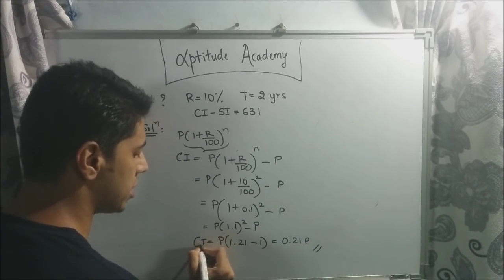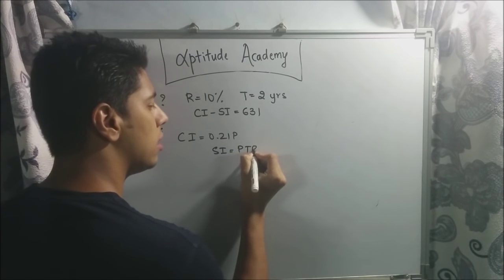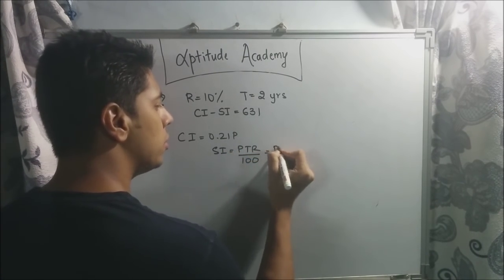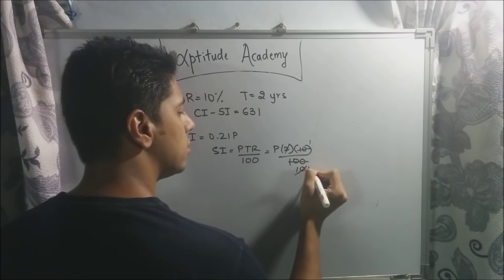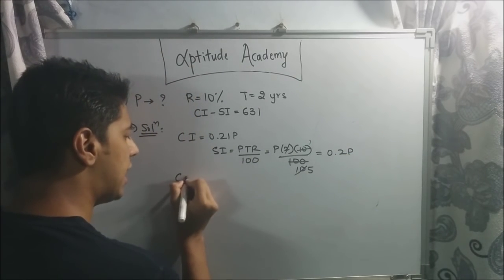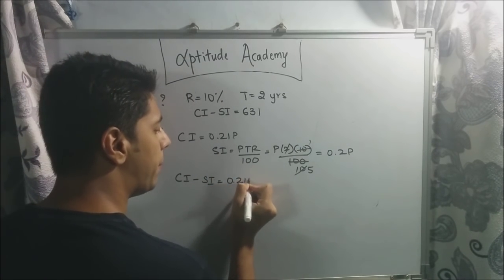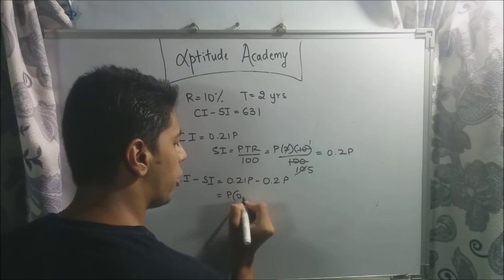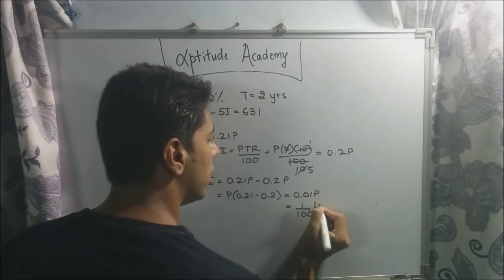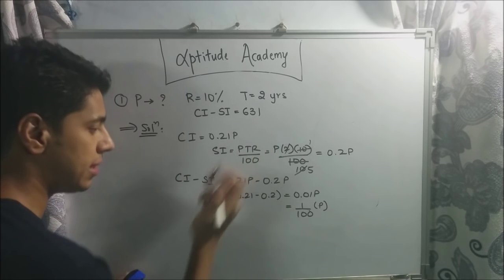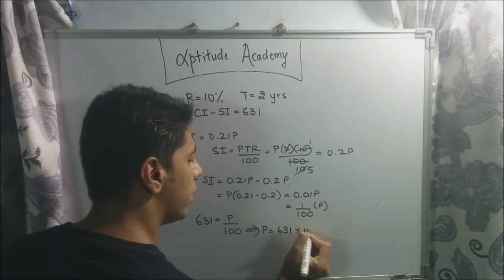Now we get the simple interest: SI = PTR/100. P is unknown, T is 2, R is 10, so SI = P × 2 × 10 / 100 = 0.2P. Now CI − SI = 0.21P − 0.2P = 0.01P, which is also P/100. We know CI − SI = 631, so 631 = P/100.